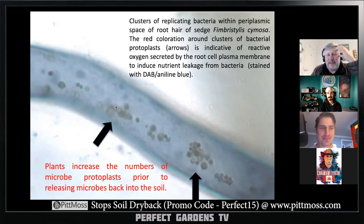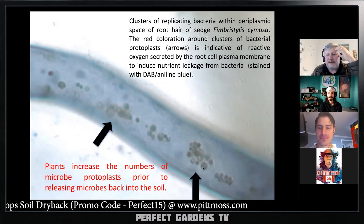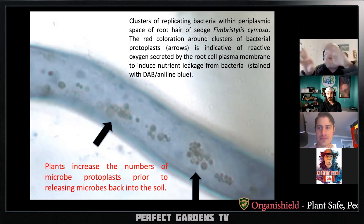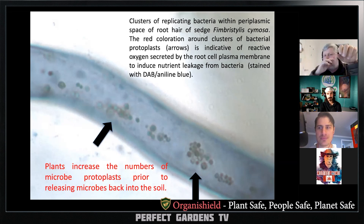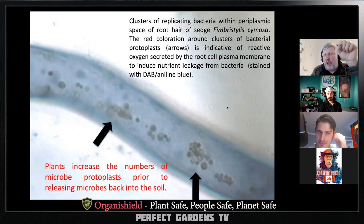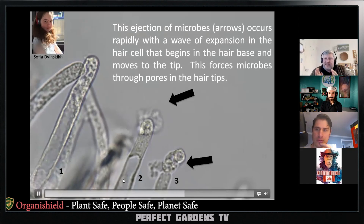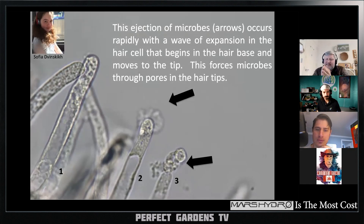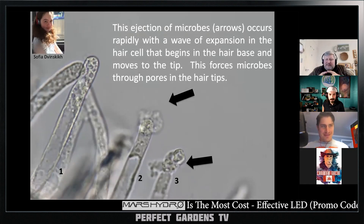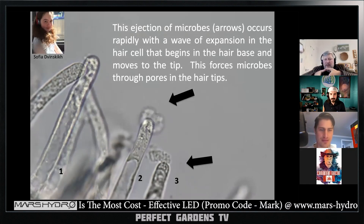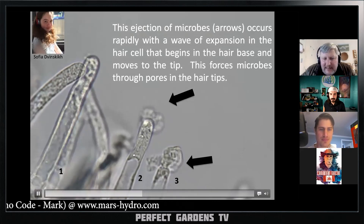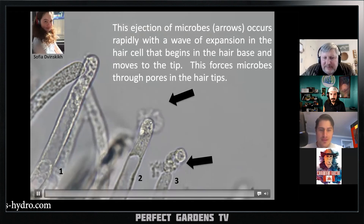This is one of these root hairs, and you can see these arrows are showing clusters of bacteria. When the plant is doing this in its hair, it's jostling these bacteria around and replicating them, cloning them. Because the bacteria are around the sides of the cell, the water pressure inside the plant cell causes the hair to expand, and that causes the bacteria around the outsides of it to be squeezed up.